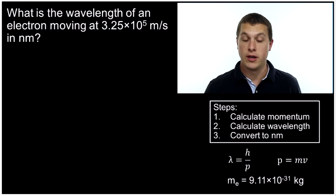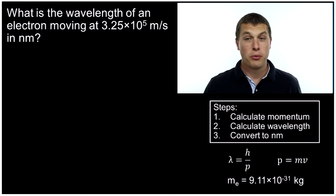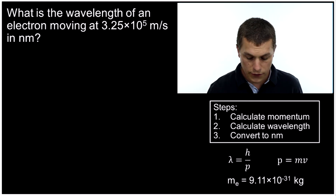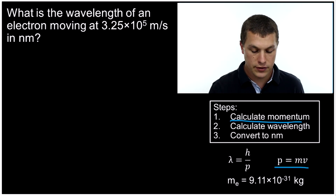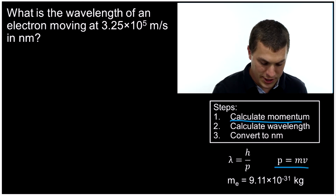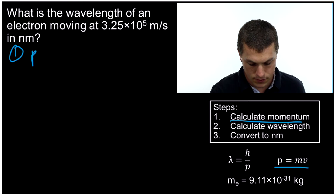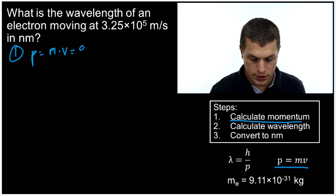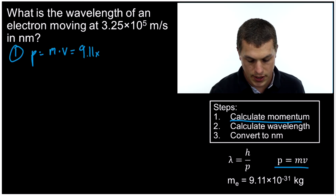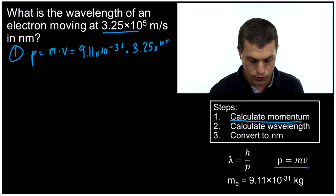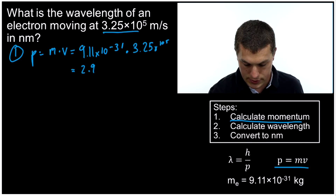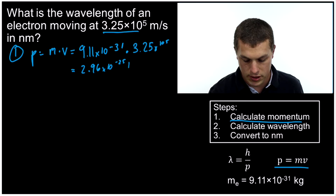So what does that look like? A question might look like this: what is the wavelength of an electron moving at 3.25 times 10 to the fifth meters per second? And we want to know that wavelength in nanometers. It's a very weird concept that the electron has a wavelength, but it turns out to be a pretty straightforward calculation. The first thing we're going to do is calculate the momentum of our particle. Momentum is equal to mass times velocity. The mass of an electron turns out to be 9.11 times 10 to the minus 31 kilograms, and we know the velocity is 3.25 times 10 to the fifth. Plugging that in, we get a momentum of 2.96 times 10 to the minus 25 kilogram meters per second.